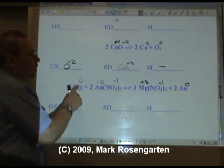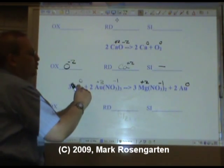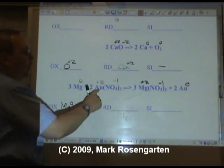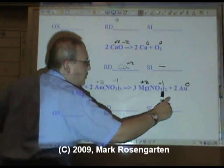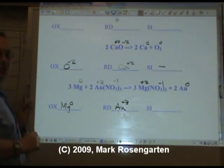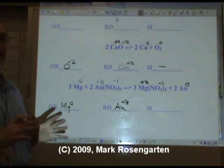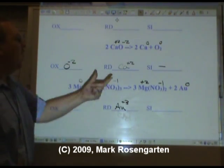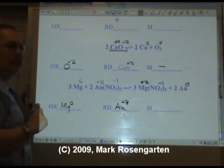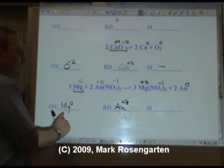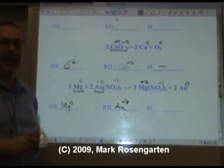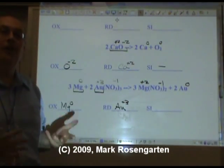The magnesium starts off as zero and ends up as plus two. Its charge becomes more positive. Therefore, it's oxidized. The gold starts off as plus three and it reduces down to a charge of zero. The Au plus three's charge was reduced. Notice that every time I identify the species that's being oxidized or reduced, I always refer to a reactant. It's always the reactant that undergoes the oxidation or reduction. The change happens to the reactant. The product is the end result of that change.